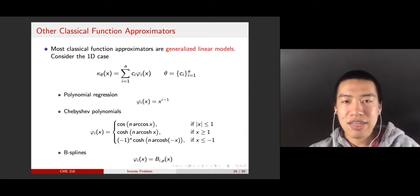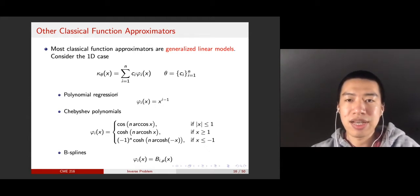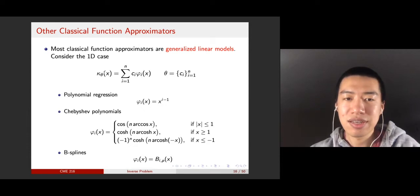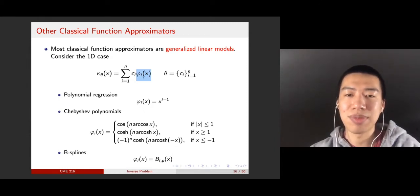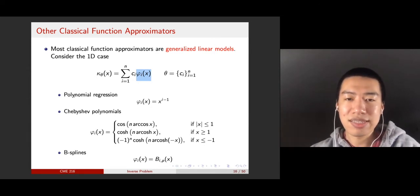There are many other classical function approximators. Most classical function approximators are generalized linear models. By generalized linear models, I mean there are linear combinations of basis functions in this form, where the unknown is a bunch of parameters, c1 to cn. And it is a linear combination of basis functions, phi_i. In the examples, in piecewise linear functions, phi_i is just the piecewise linear functions. And in radial basis functions, phi_i is just the radial basis functions. And there are many other cases as well.